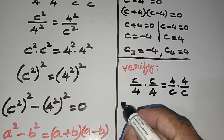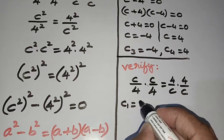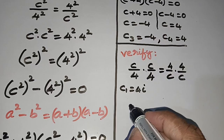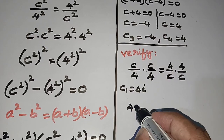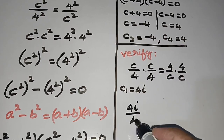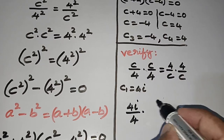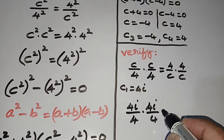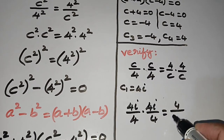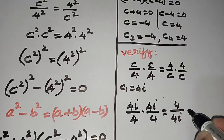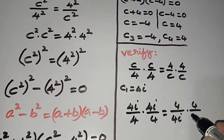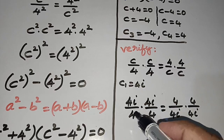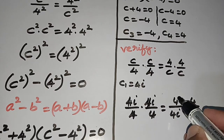Taking c₁ = 4i and substituting: 4i/4 times 4i/4 equals 4/(4i) times 4/(4i). Now cancelling 4 and 4 on each side.